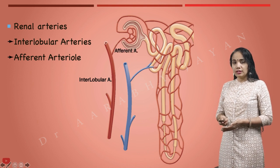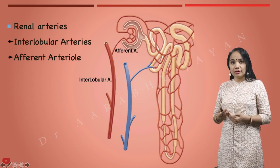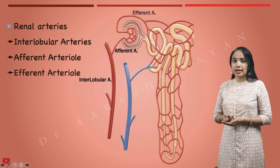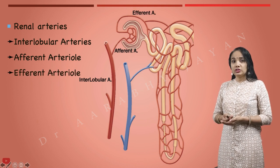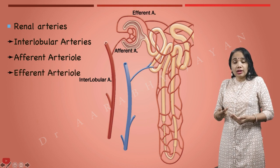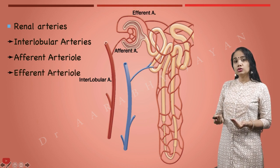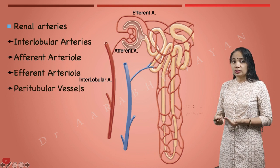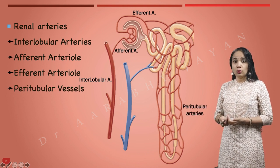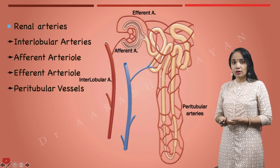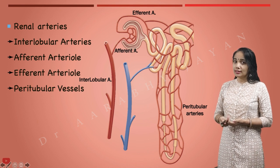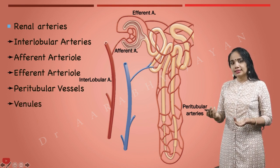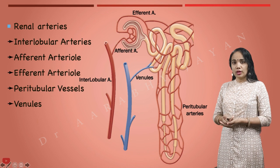The afferent arteriole forms the glomerulus, then exits as the efferent arteriole, which re-divides around the loop of Henle to form the peritubular vessels — also called vasa recta — of the countercurrent system. The vasa recta then collect into venules.